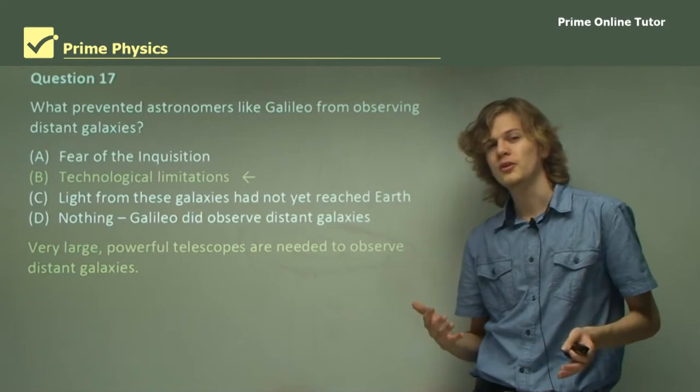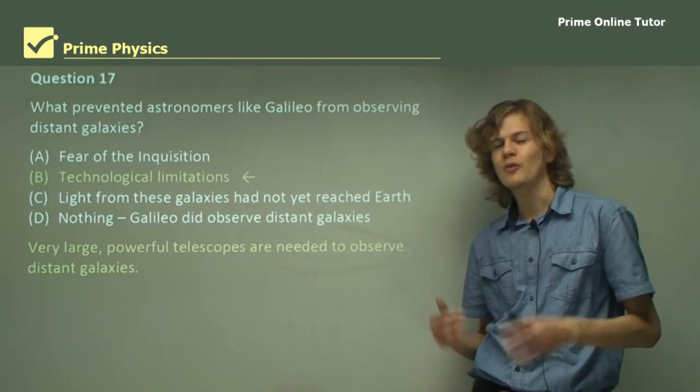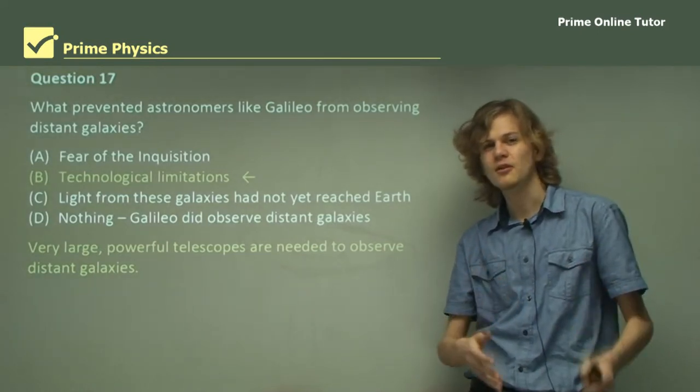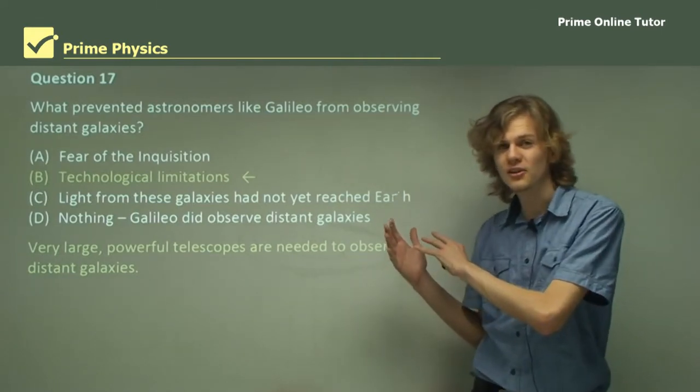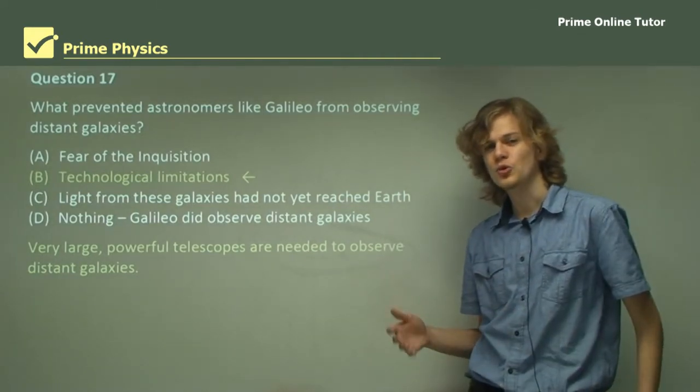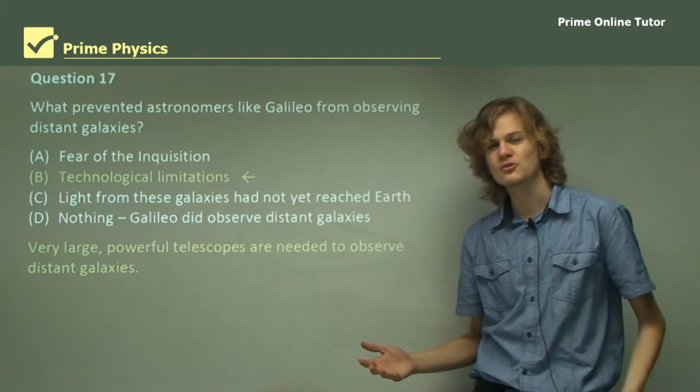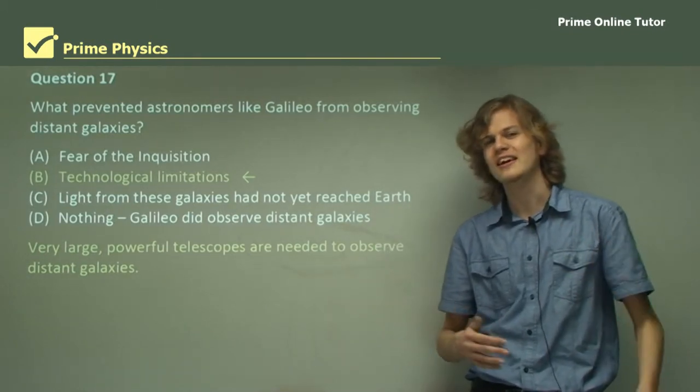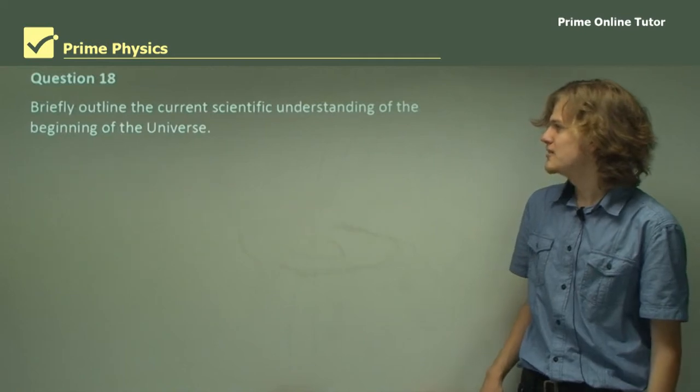In fact, it's so difficult to observe distant galaxies that our best views of distant galaxies come from a telescope that was put into space, the Hubble Space Telescope. And that allows us to observe the night sky without having to worry about the Earth's atmosphere getting in the way.